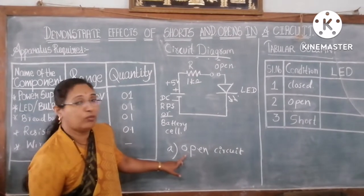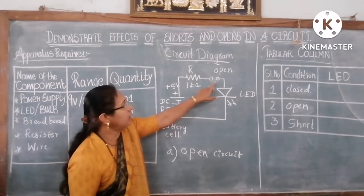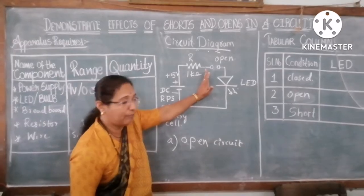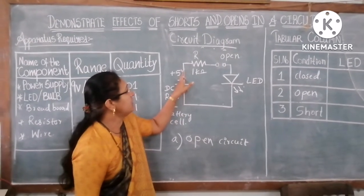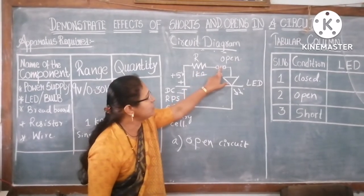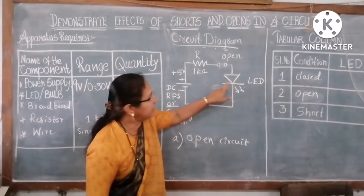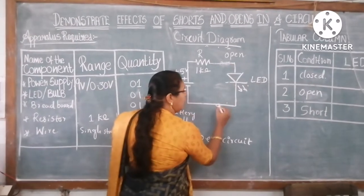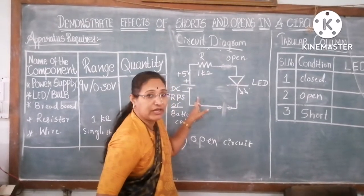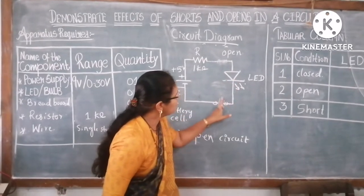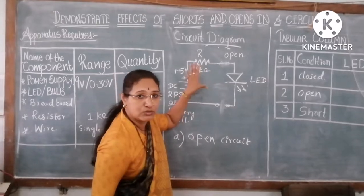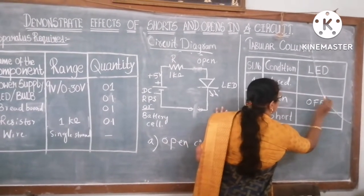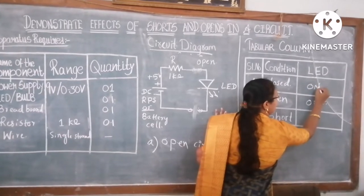Now let us take the next circuit — the open circuit — where somewhere the wire is open. There is no connection between these two wires, so this is called an open circuit. If you give the supply, the current will flow through the resistance and reach a point, but as there is no connection, the current will not flow through the LED. Because of this, the LED will be off. Even if you open the circuit at a different point, there is still no path for the current to close, so the LED will still be off. In the open circuit, the LED condition is off; in the closed circuit, the LED condition is on.